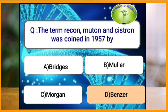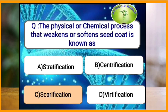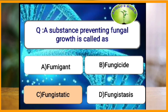The term recon, muton, and cistron was coined in 1957 by which scientist? These terms were coined by Benzer from the r2 locus of T4 bacteriophage. The physical or chemical process that weakens or softens the seed coat is known as scarification.